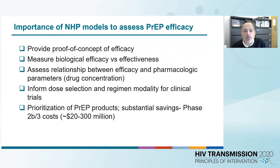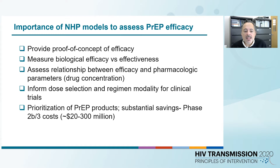Why are NHP or non-human primate models important to assess efficacy? First, these models can provide proof of concepts of efficacy. They can measure biological efficacy versus effectiveness since we are able to control drug dosing. We can investigate relations between efficacy and pharmacological parameters to tackle drug levels in plasma or in tissues. We can inform dose selection and regimen modality for clinical trials, and the models can help prioritize PrEP products which may result in substance for phase 2 and 3 trials.